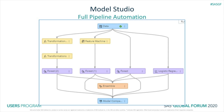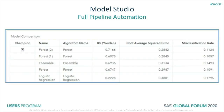You can optionally unlock the pipeline so you can edit it to include your domain knowledge by adding, deleting, or modifying nodes in the pipeline. Alternatively, you can run the pipeline as is to get the overall pipeline champion model based completely on automation, as shown here in the model comparison node. Here, the forest model in the branch of the pipeline that included two sets of transformations has the best KS statistic, the chosen model selection criterion, so it's designated as the champion model for this pipeline.